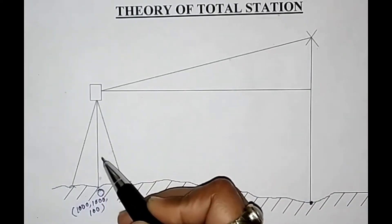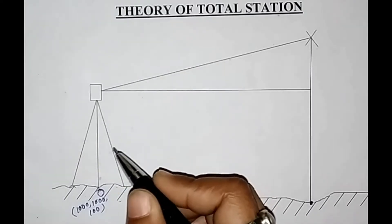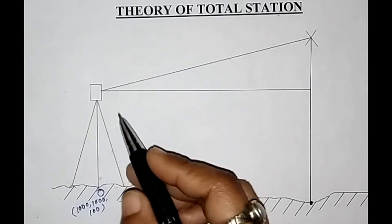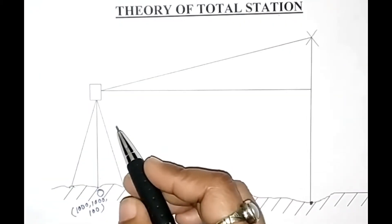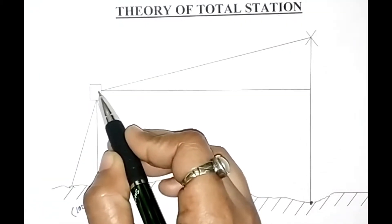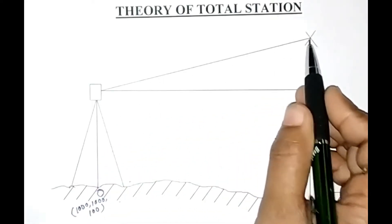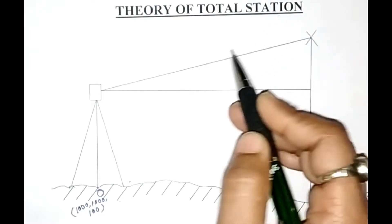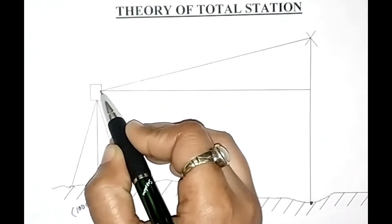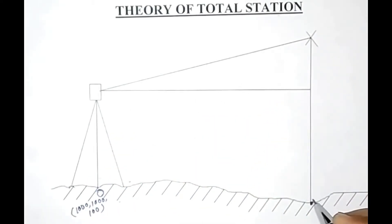As soon as leveling, centering, and orientation is done — orientation means we locate the northing position to the total station — when orientation is done, the total station bisects the target, that is our prism, bisects the target center. And total station then calculates the northing, easting, and elevation value of the unknown coordinate.